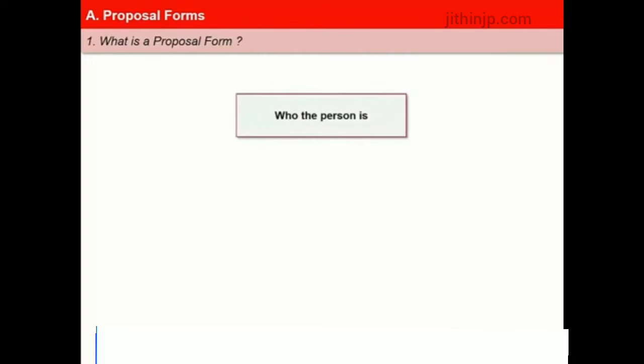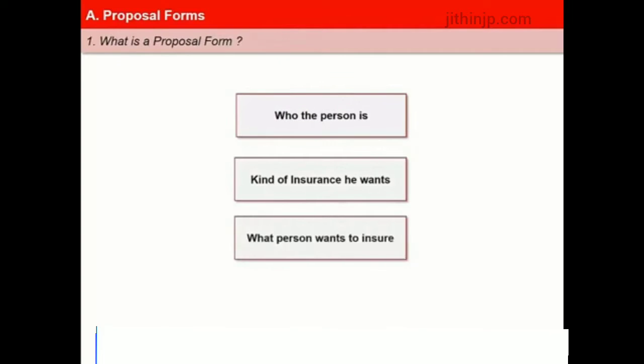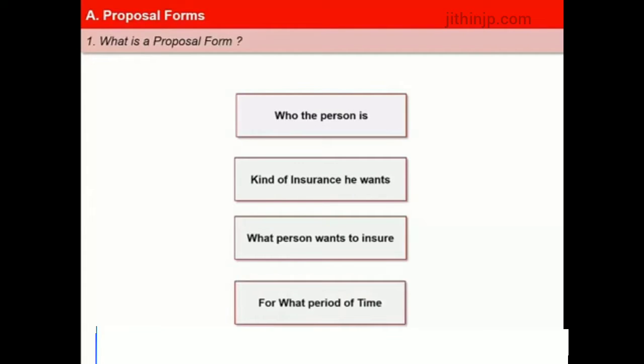The insurance company comes to know the customer and his or her insurance needs from the documents submitted by the customer. Such documents also help the insurer to understand the risk better. The first stage of documentation is basically the proposal form, through which the insured informs who the person is, what kind of insurance he or she needs, details of what he or she wants to insure, and for what period of time the insurance is needed. These details help determine the monetary value of the subject matter of insurance and all material facts connected with the proposed insurance.